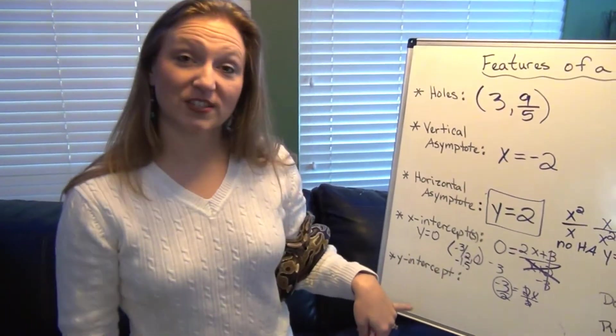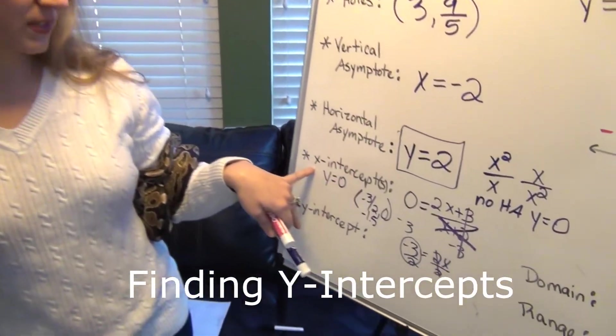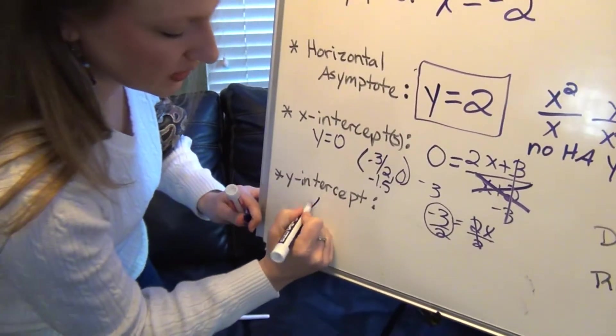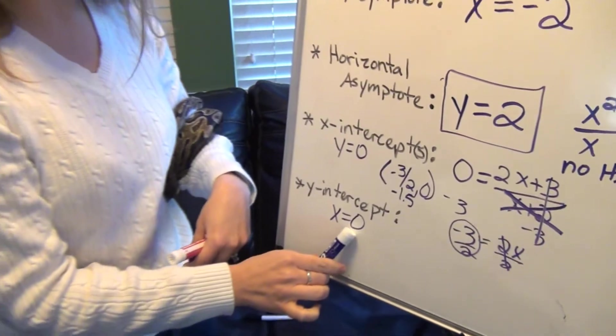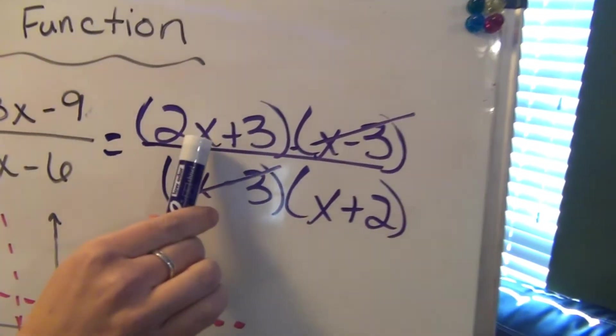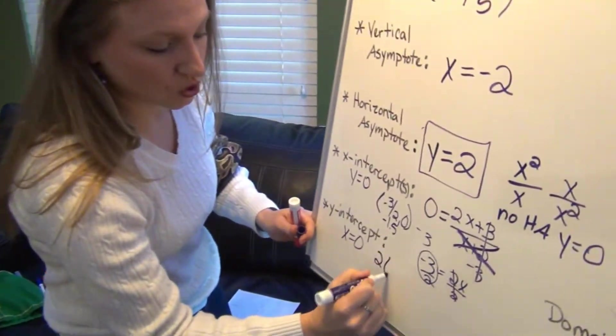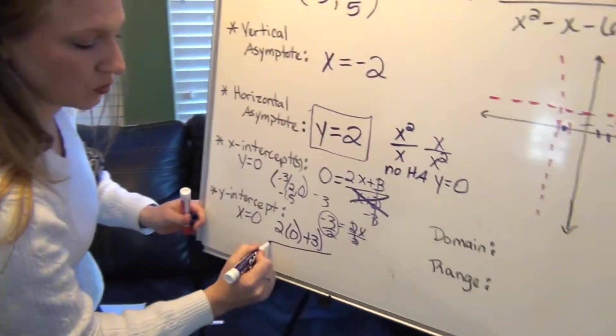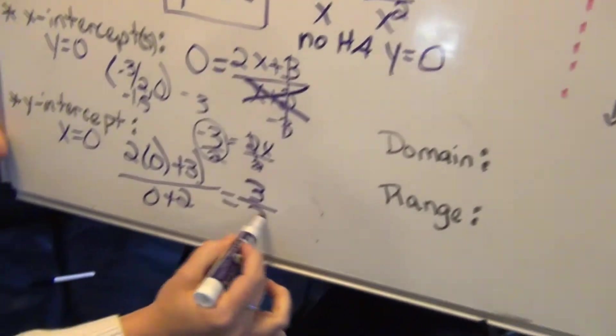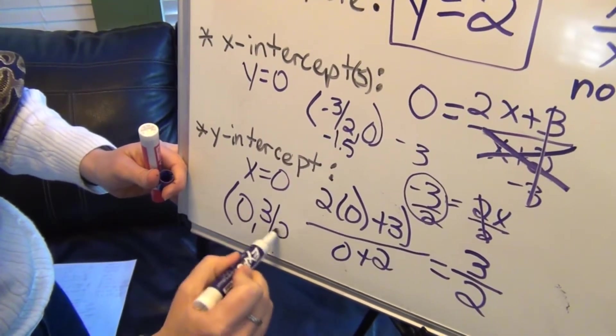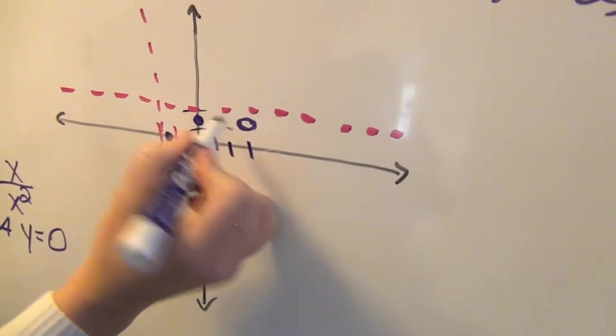Okay, so to find y-intercepts, it's very similar to finding x-intercepts. Notice for the x-intercept, y had to be 0. So therefore, to find the y-intercept, x has to be 0. So I'm going to plug 0 into my remaining function for both x's and that will give us the y-intercept. So 2 times 0 plus 3 for the numerator and then 0 plus 2 in the denominator. So that comes out to 3 over 2. Therefore, my y-intercept is 0, 3 halves or 1.5. So let's plot that.